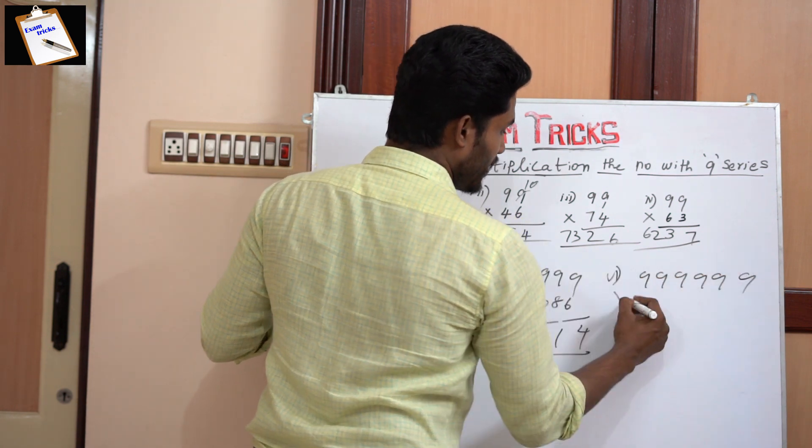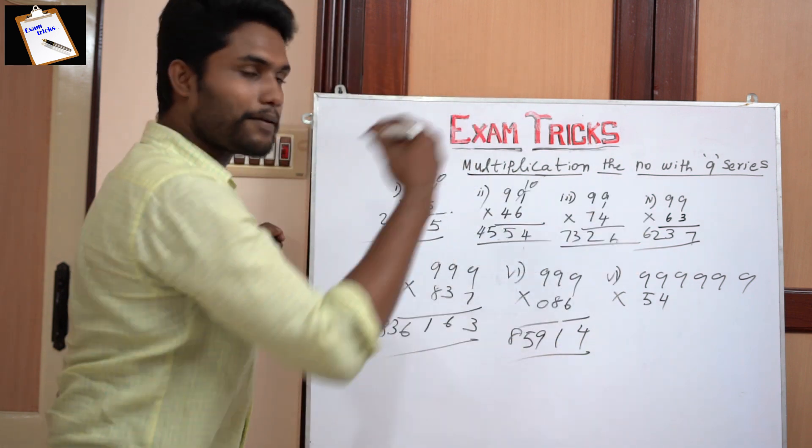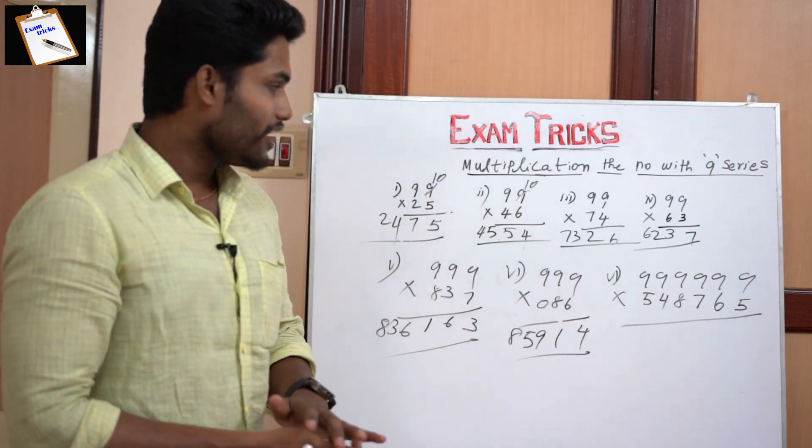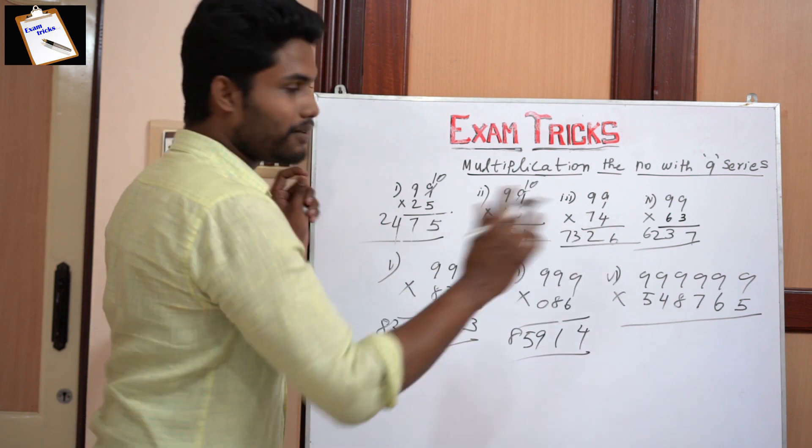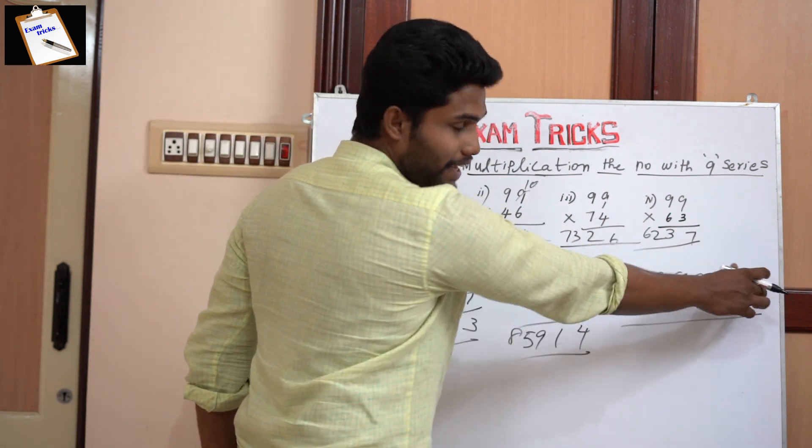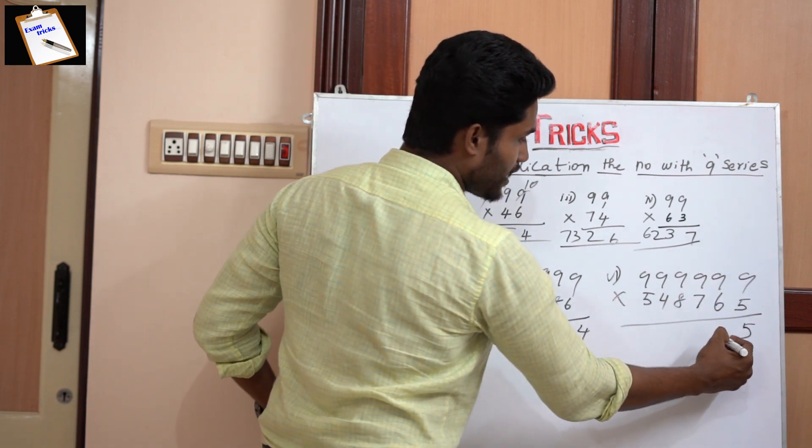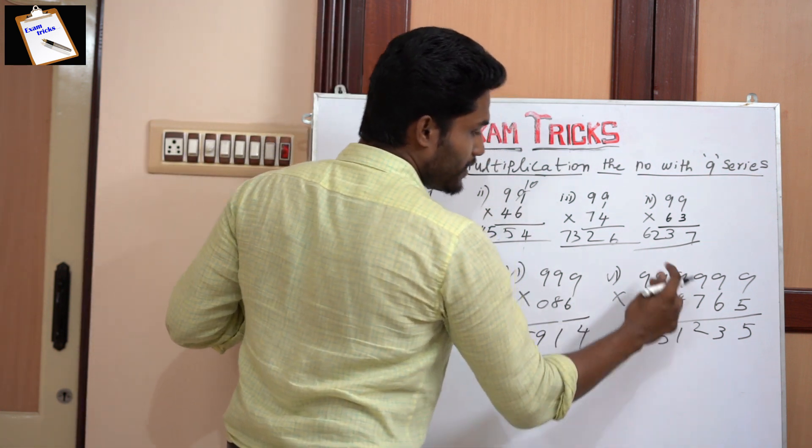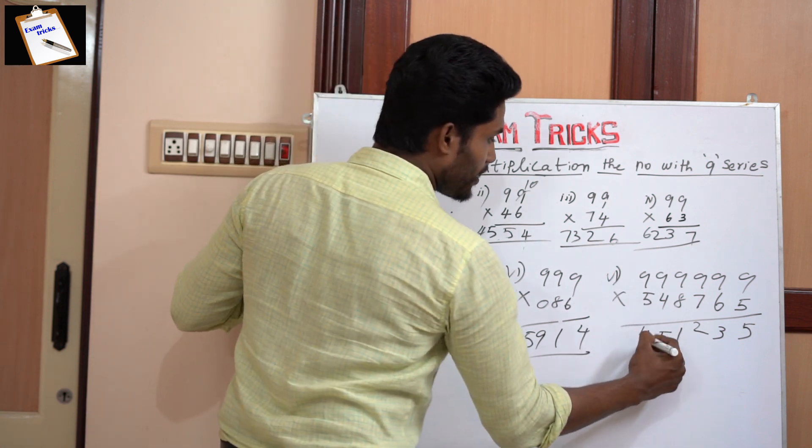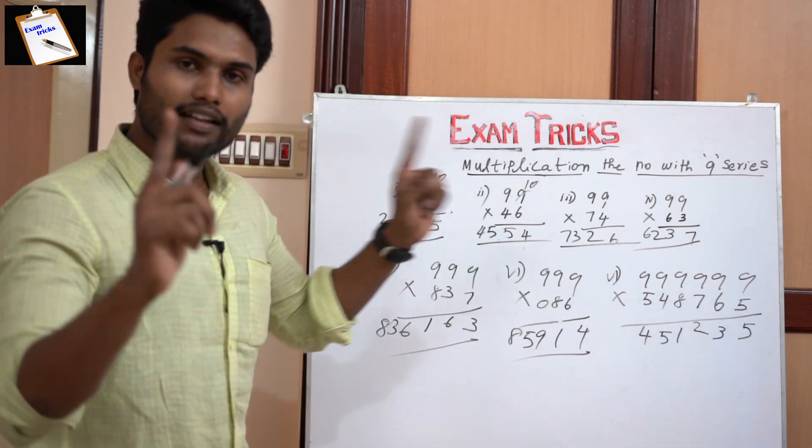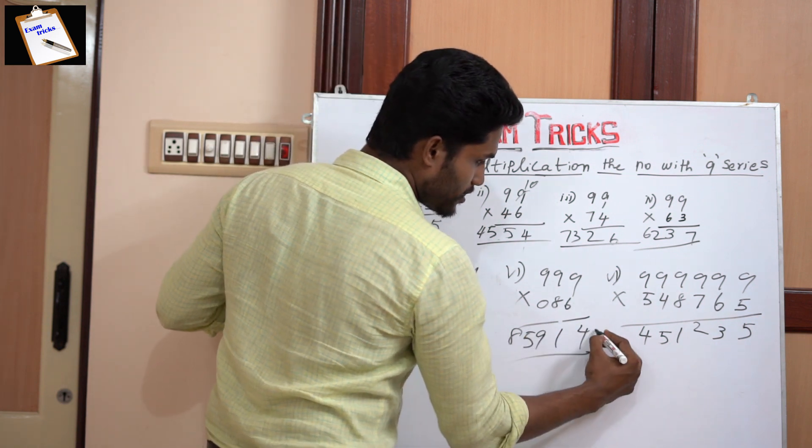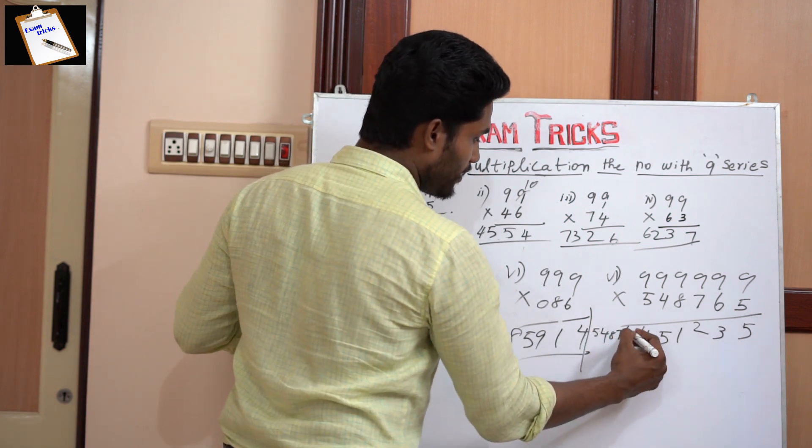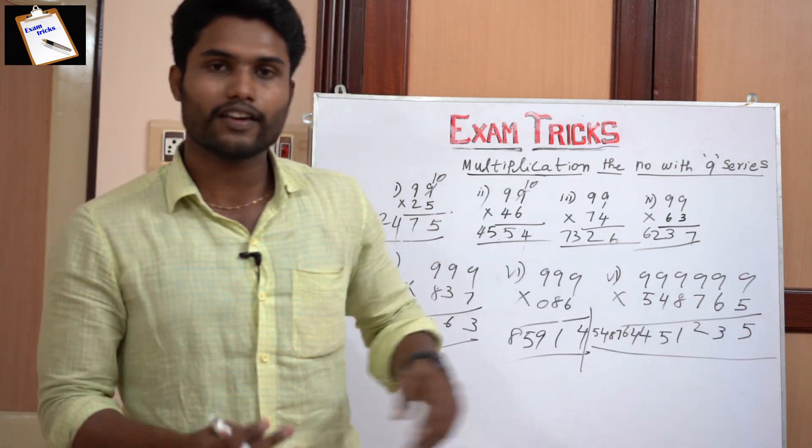Suppose if you want to multiply 9999999 with 548765, I'm choosing some random number. Even a calculator can't get this value, but we can multiply the number easily. Assume the last place is 10. 10 minus 5 is 5, 9 minus 6 is 3, then 9 minus 7 is 2, 9 minus 8 is 1, 9 minus 4 is 5, then 9 minus 5 is 4. The given number is 548765, you just subtract one number, so the answer is 548764451235. This is the easy way of solving numbers with 9 series.